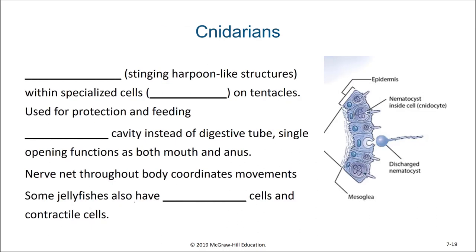One key feature that cnidarians have are these harpoon-like structures known as nematocysts, and they're found within a particular type of cell known as a cnidocyte. Nematocysts are these coiled harpoon-like structures that usually have a trigger, and when that trigger is pressed, it will discharge the harpoon. The cells that hold these nematocysts are called cnidocytes.